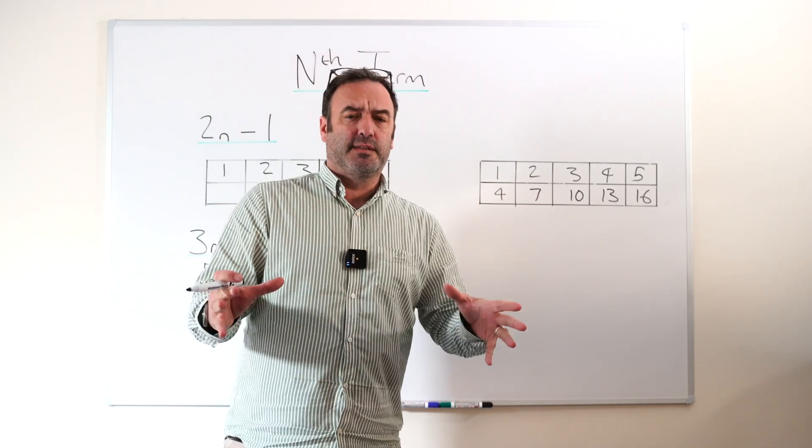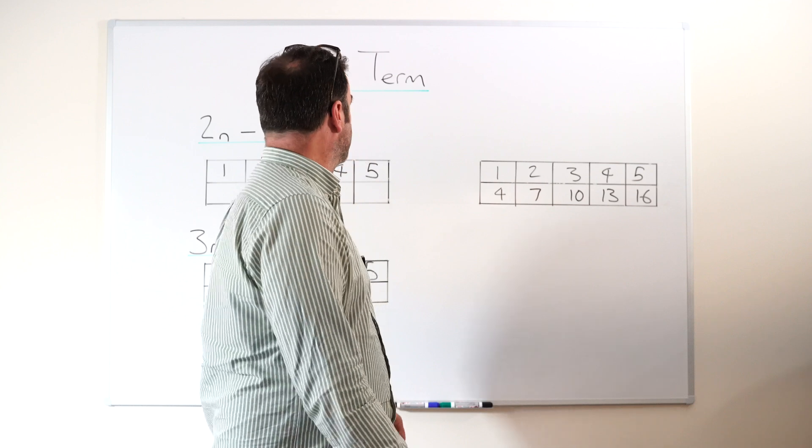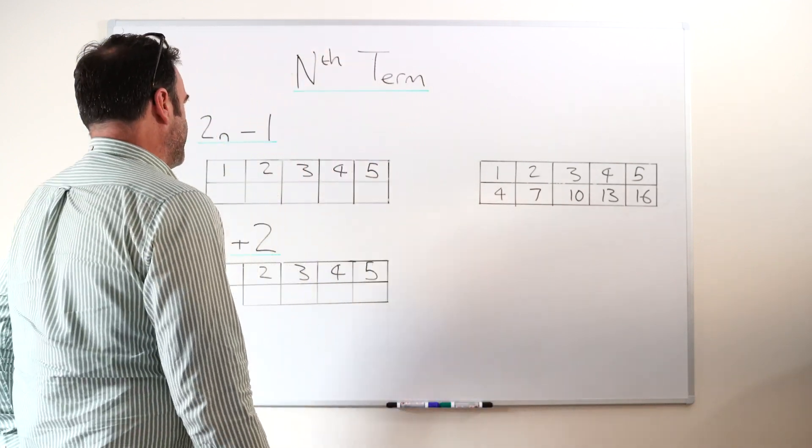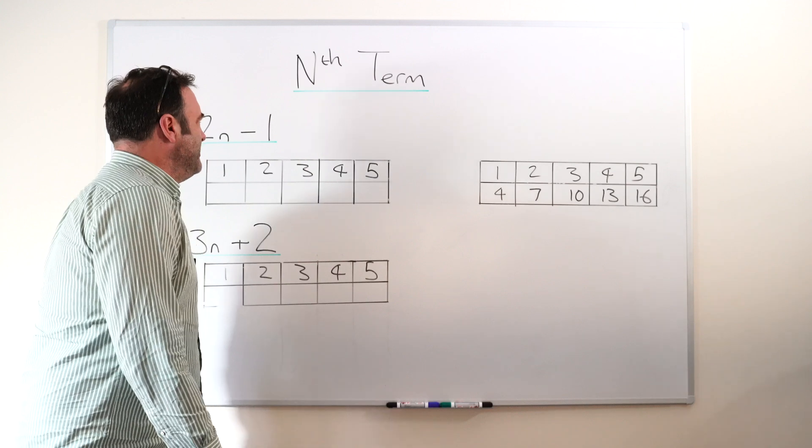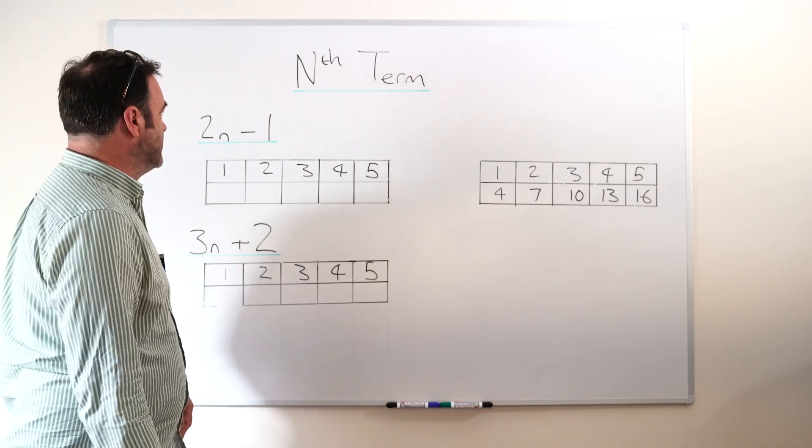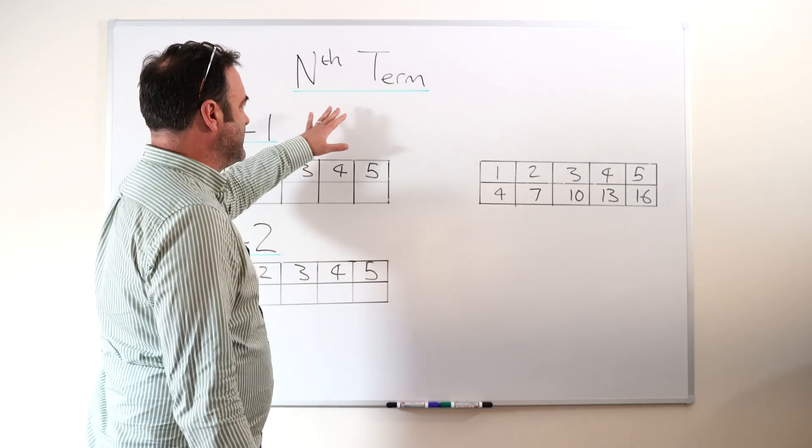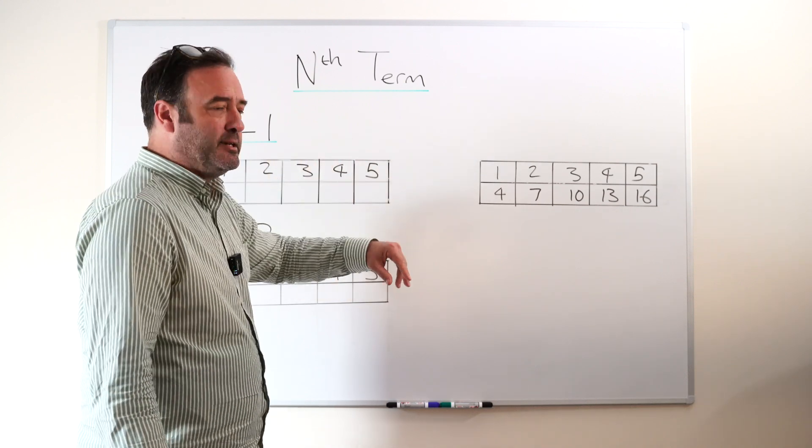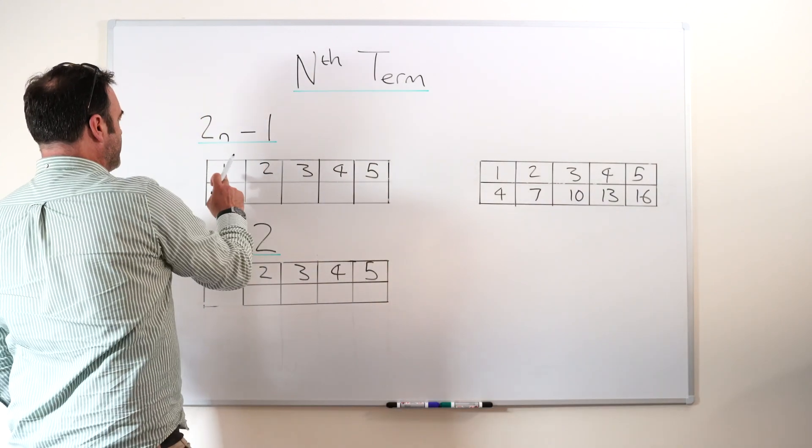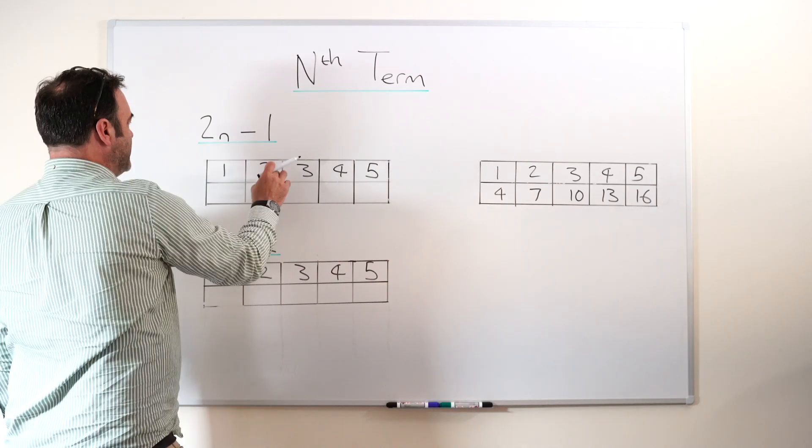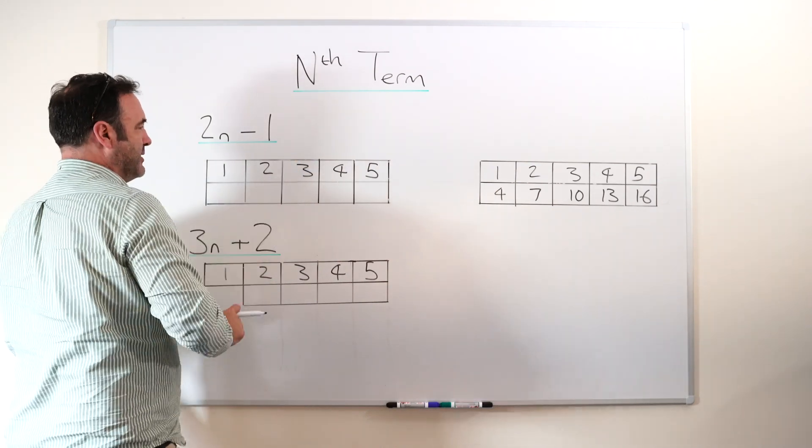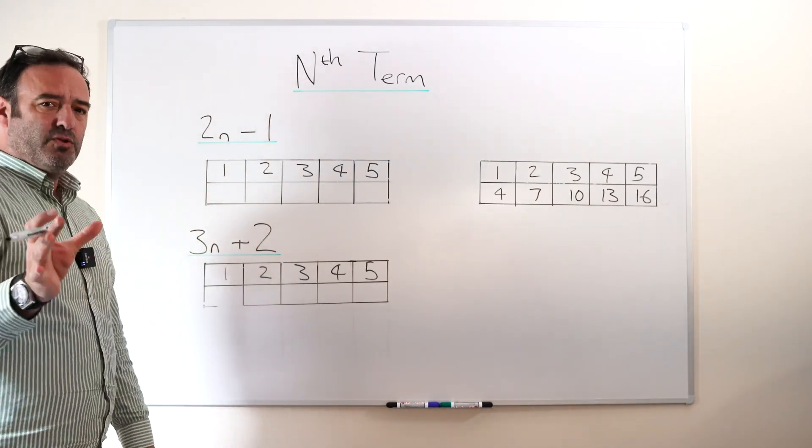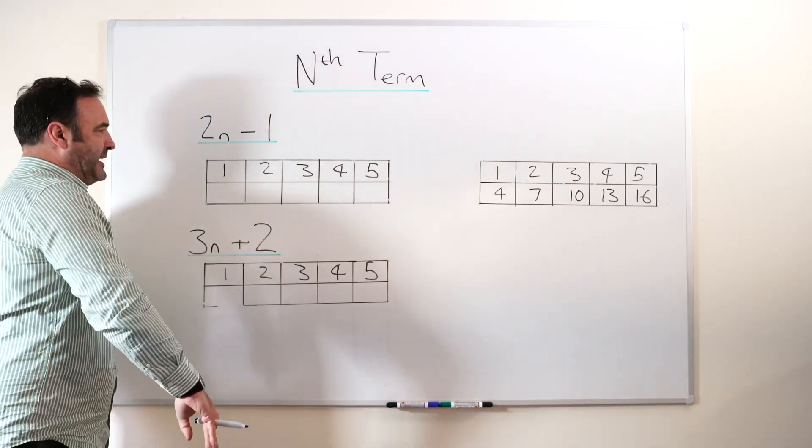about a special type of sequence that can come up in the 11 plus exams called an nth term sequence. Now that sounds very complicated, nth term, but what it really means is something quite straightforward. It's a sequence that is dependent on the position in the sequence, so n stands for position one, or n could be position two, n could be position three, and so on. And we have a rule. Now the rule is written as a sort of algebraic expression.